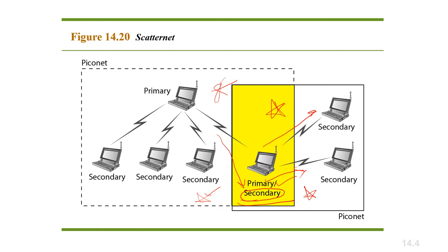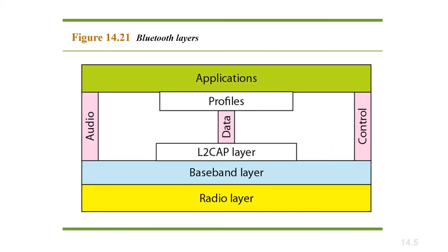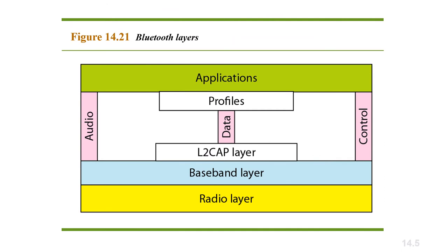Bluetooth devices are basically short-range radio transmitters. The current data rate supported by Bluetooth is 1 Mbps and the bandwidth is 2.4 GHz, making it suitable for short-range communication. Moving on to Bluetooth layers: Bluetooth uses several layers which, while not exactly matching the internet model, follow a layered architecture.